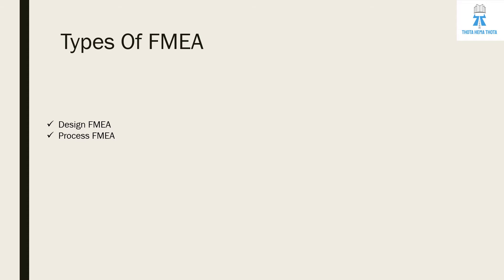So what is FMEA? FMEA is failure mode and effects analysis. This FMEA is classified into two types: design FMEA and process FMEA.